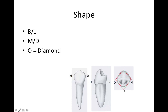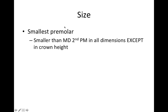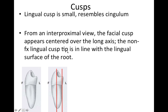From the occlusal, this is going to be a diamond shape. As far as size is concerned, this is the smallest of the premolars. It's smaller than the mandibular second premolar in all dimensions except crown height. If you recall the maxillary premolars, that first premolar was the largest — this one is going to be the smallest.